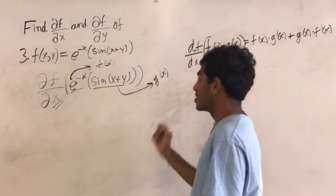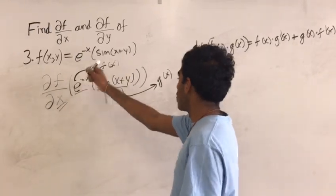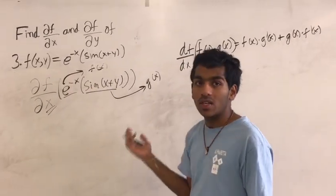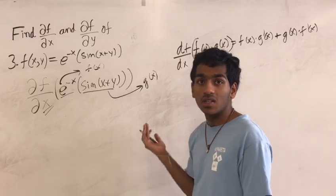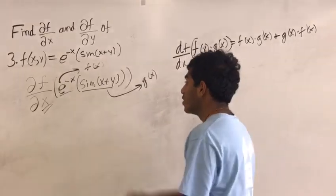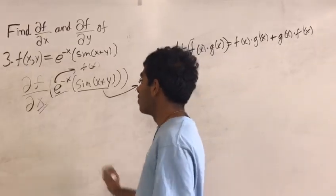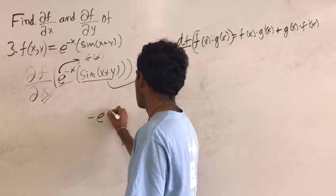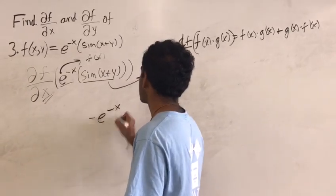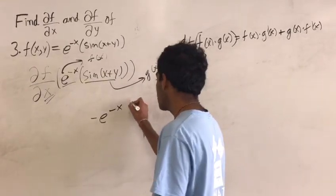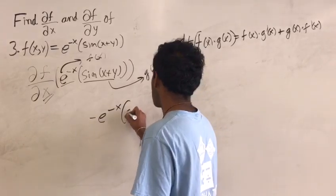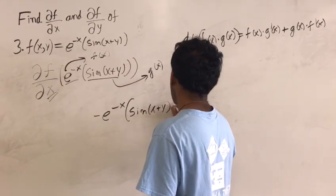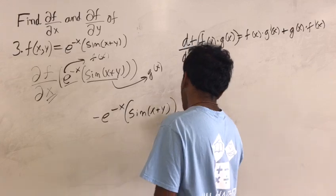Starting off differentiating this, I'm going to take the derivative of f first. It doesn't matter which way I do it because it's addition, and addition is commutative. So the derivative of e raised to negative x is just going to be negative e raised to negative x, and now I've got to multiply the function by it, so that is going to be the sine of x plus y.